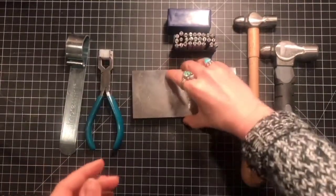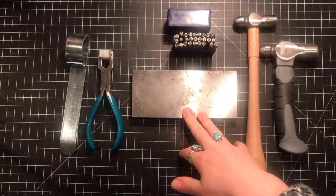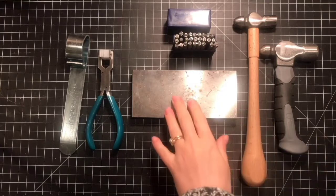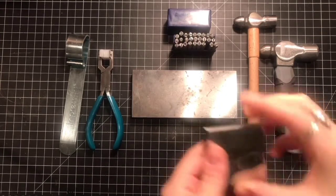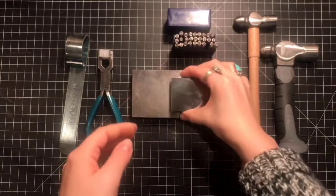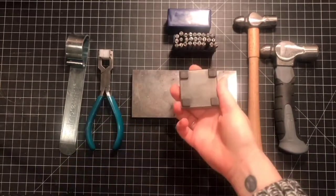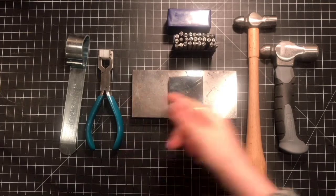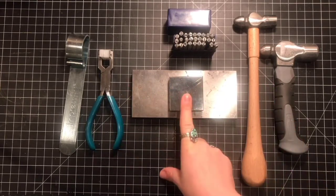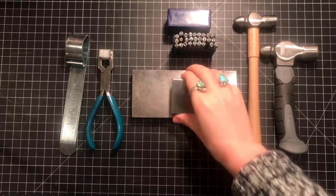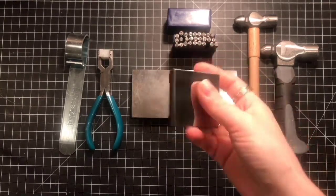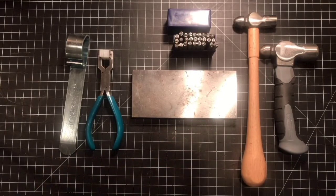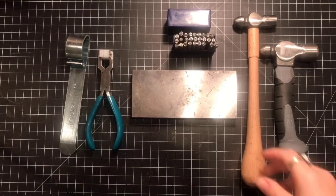You need a steel block. They sell these at Joann's, Michaels, any craft center but this one was specially made. The one that I first bought was this very small metal block and it doesn't really have a large surface area so it's hard to lay out a long piece for a bracelet. This small piece right here was around $13.